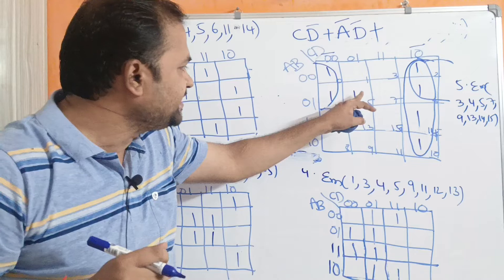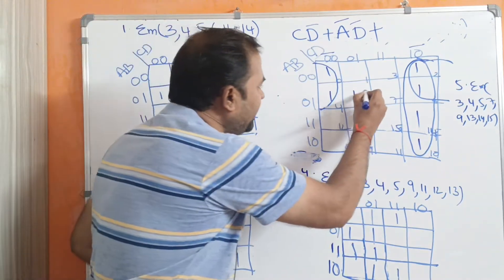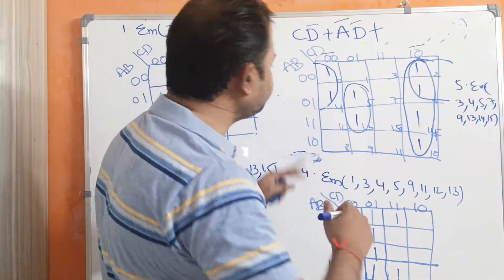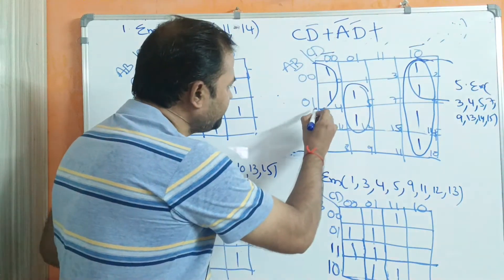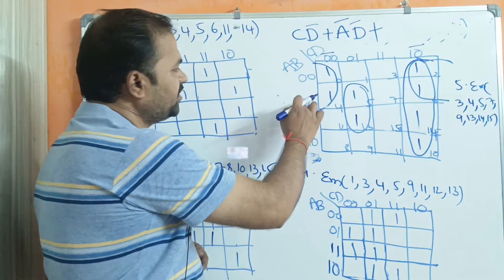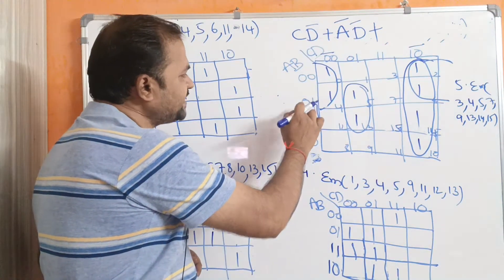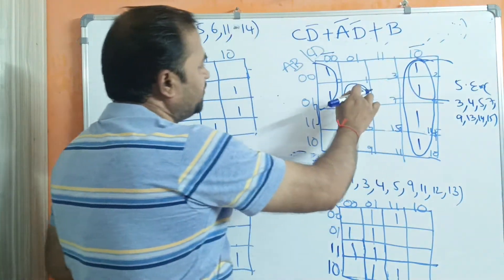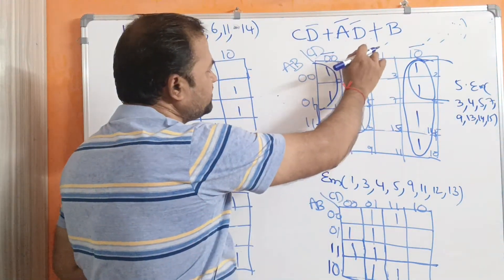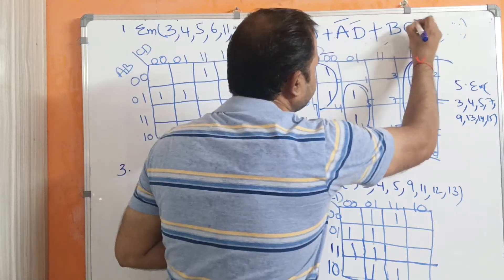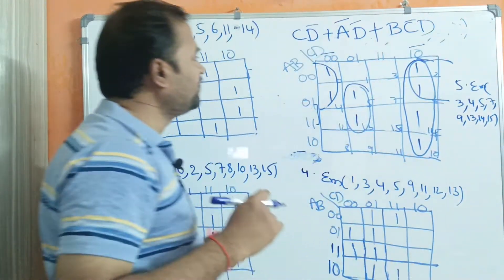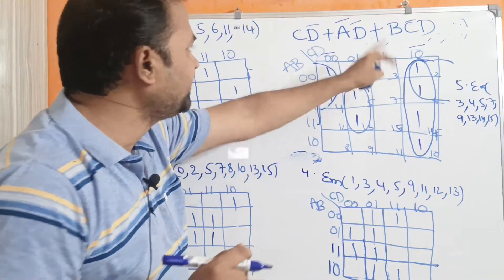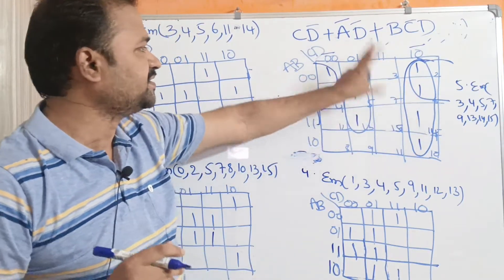These 2 ones are not yet covered, so we can make these 2 cells as a pair. Here, 1 is common — that is the value of B — so we write B. This column is 0,1 which means C̅D. So the term is BC̅D. The simplified expression for this problem is CD̅ + A̅D̅ + BC̅D.